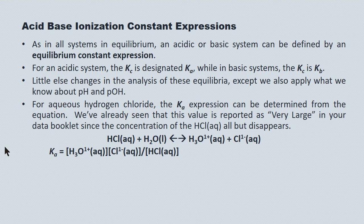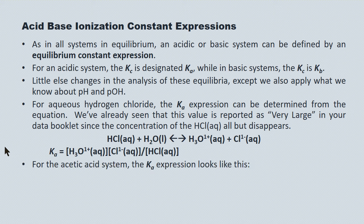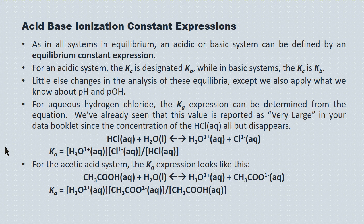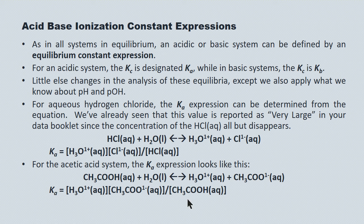Very strong acids are strong because they're very effective at donating their protons into solution. On the other hand, for acetic acid, which is a weaker acid, the Ka expression is derived from the chemical equation like this. Here's the Bronsted-Lowry chemical equation, and the Ka expression is determined by molar concentration of products over molar concentration of reactants. Water is left out because it's in liquid phase. For acetic acid, it's a weak acid, so the concentration of acetic acid doesn't go to zero. As little as 1.3% of acetic acid ionizes, so you're going to have a very much smaller Ka value for acetic acid, which you can find in your table of relative strengths of acids and bases.